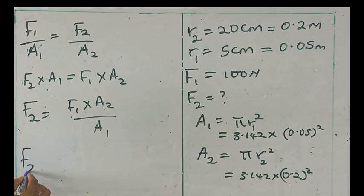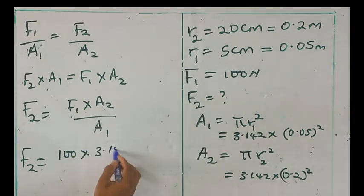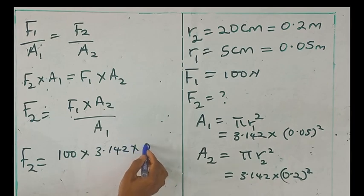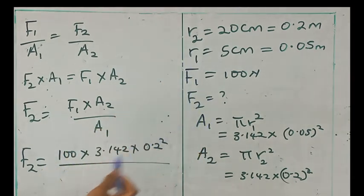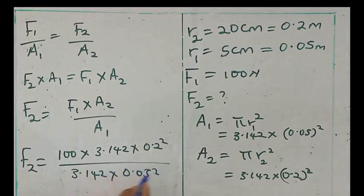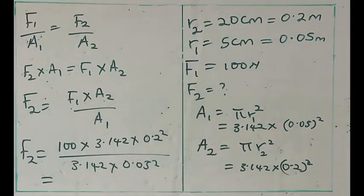So let's substitute everything. F1 is 100 times A2 is 3.142 times 0.2 squared over A1. A1 is 3.142 times 0.05 squared. So that our final answer for the force we are looking for will be 1,600 newtons.